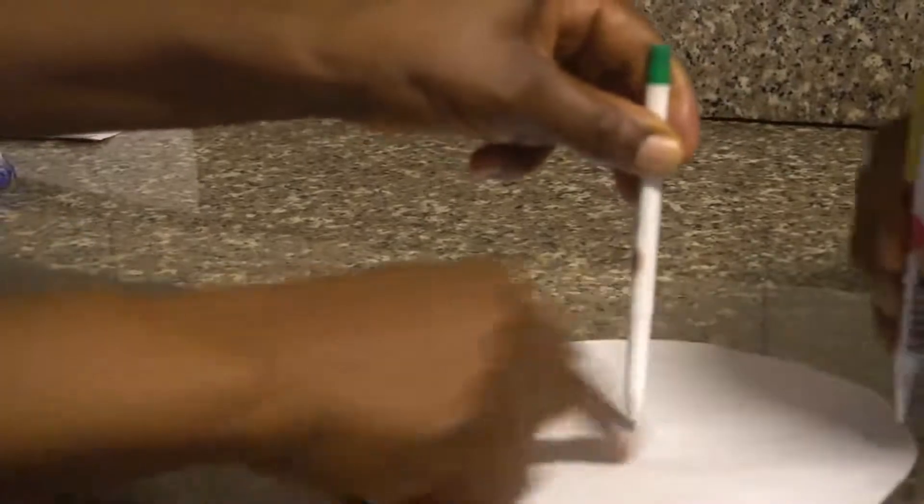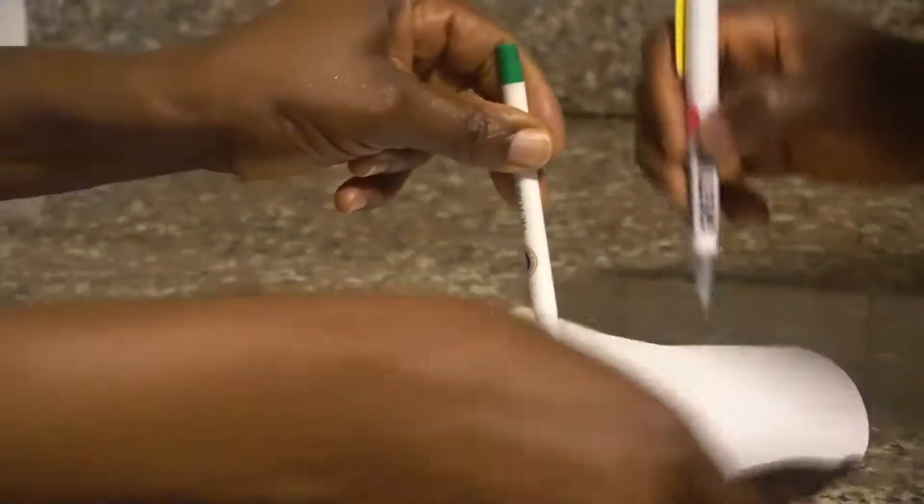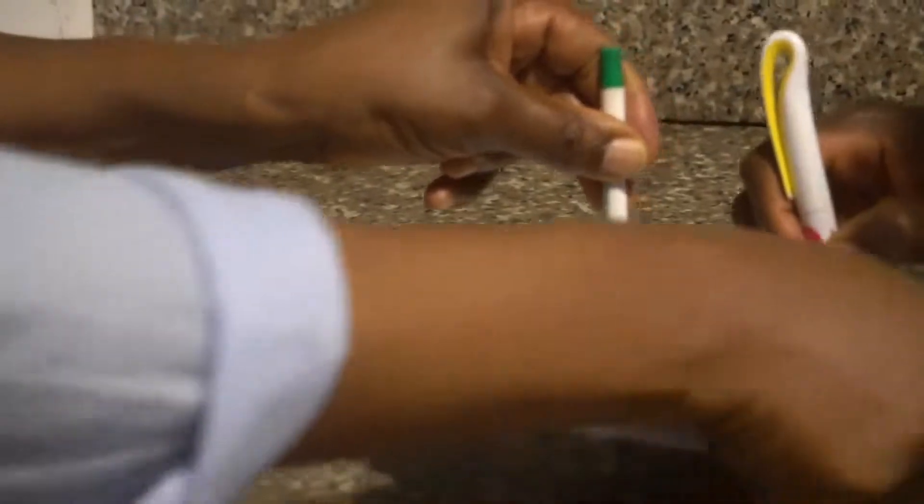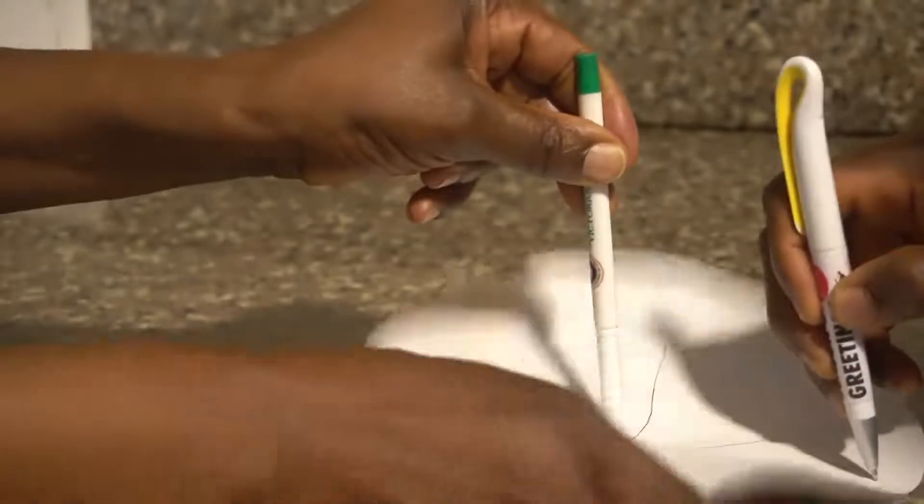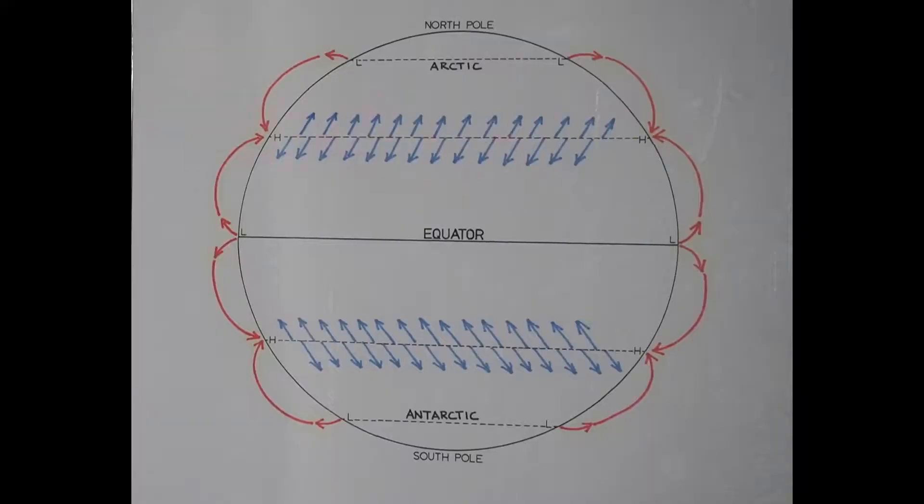Why do you think it's bent? Go. You cannot draw a straight line because the paper is moving. That's why the line is not straight, it's slanted.